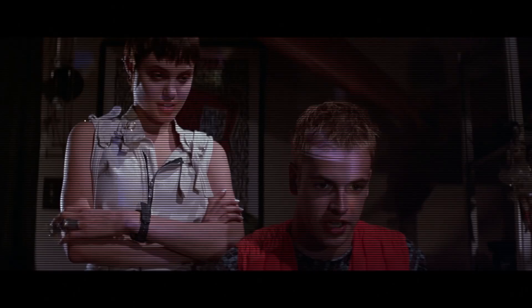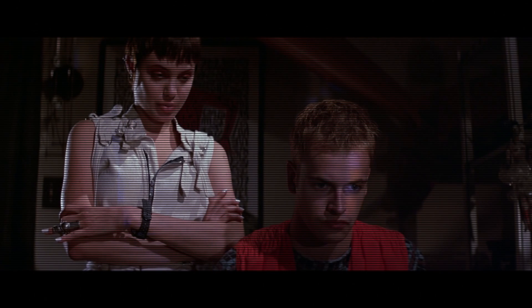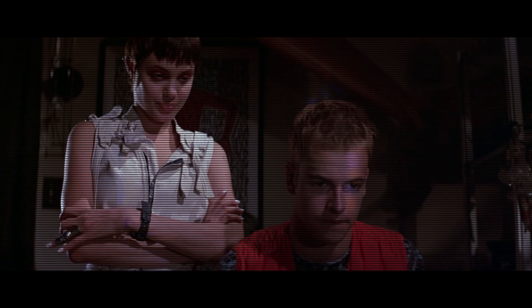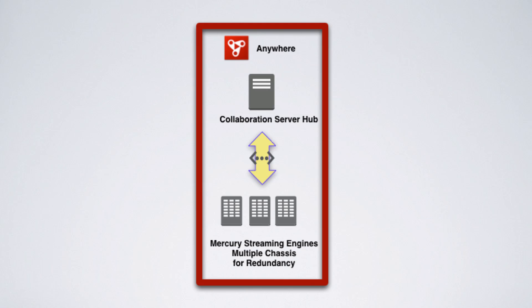Adobe Anywhere relies heavily on GPU processing as well as server redundancy to maintain a high quality of service to those client systems requesting the streams. This is accomplished by three GPU-accelerated monster servers. These three GPU-accelerated servers, called Mercury Streaming Engines, are accompanied by at least one traffic cop, known as the Collaboration Hub. These four systems enable the core functionality of Adobe Anywhere, and this core system supports about a dozen users.